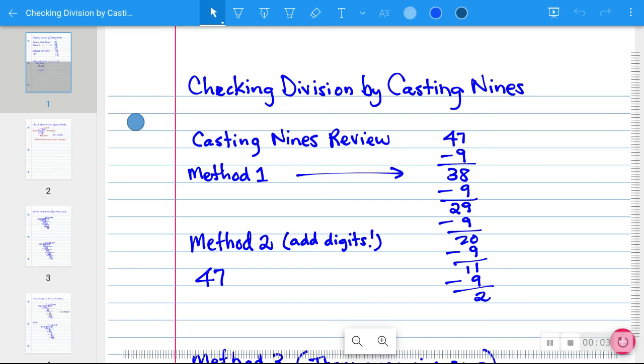All right, in this short video we're going to learn how to check division problems by casting nines. It's an old process that is unfortunately not taught anymore. It's really a quick way to check handwork and I hope I explain it clearly here to you.